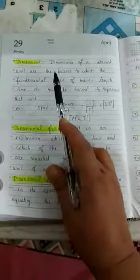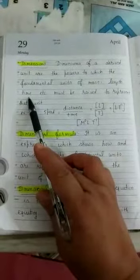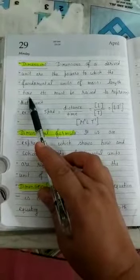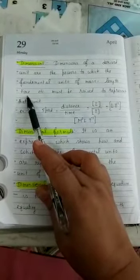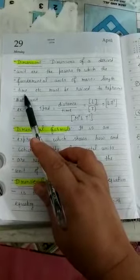Dimension means to what power the fundamental quantities should be raised so that they represent the formula, they represent any derived quantity or any derived unit.